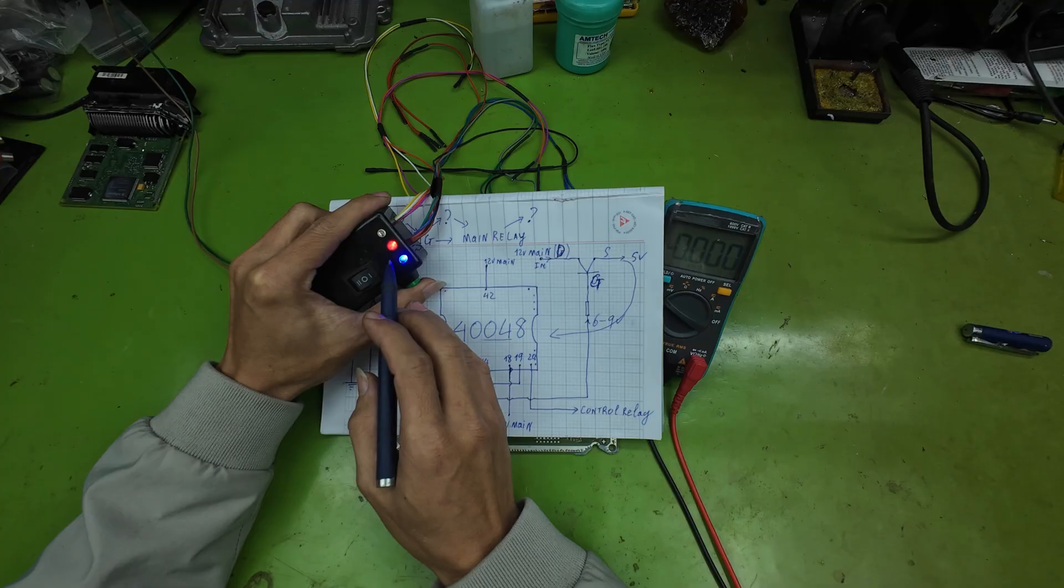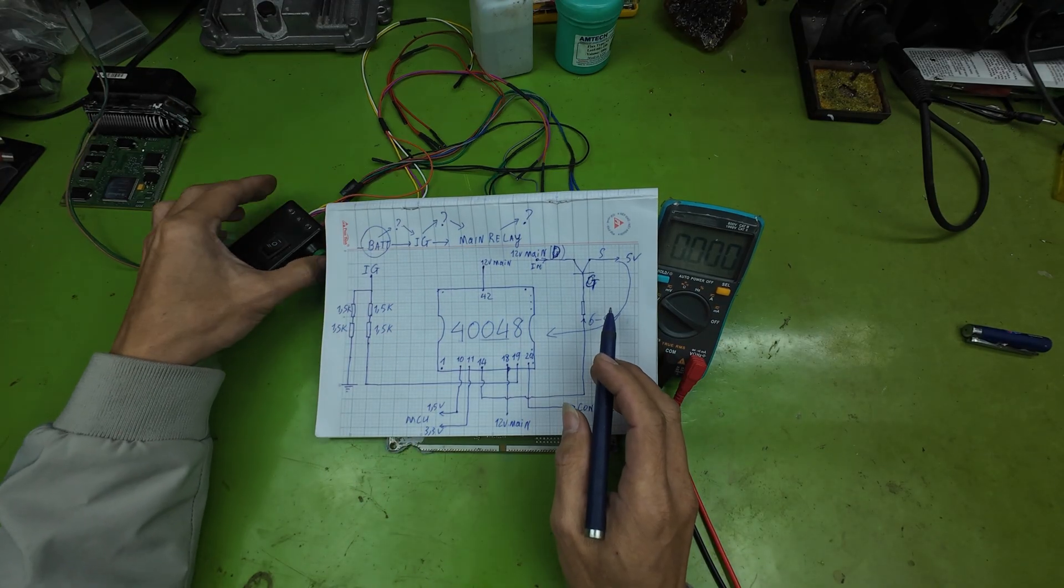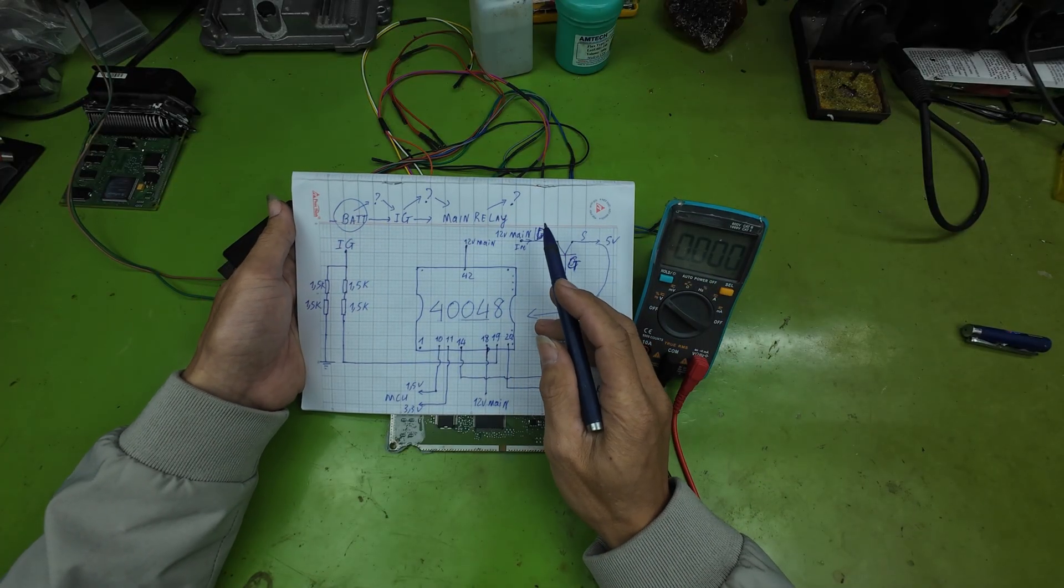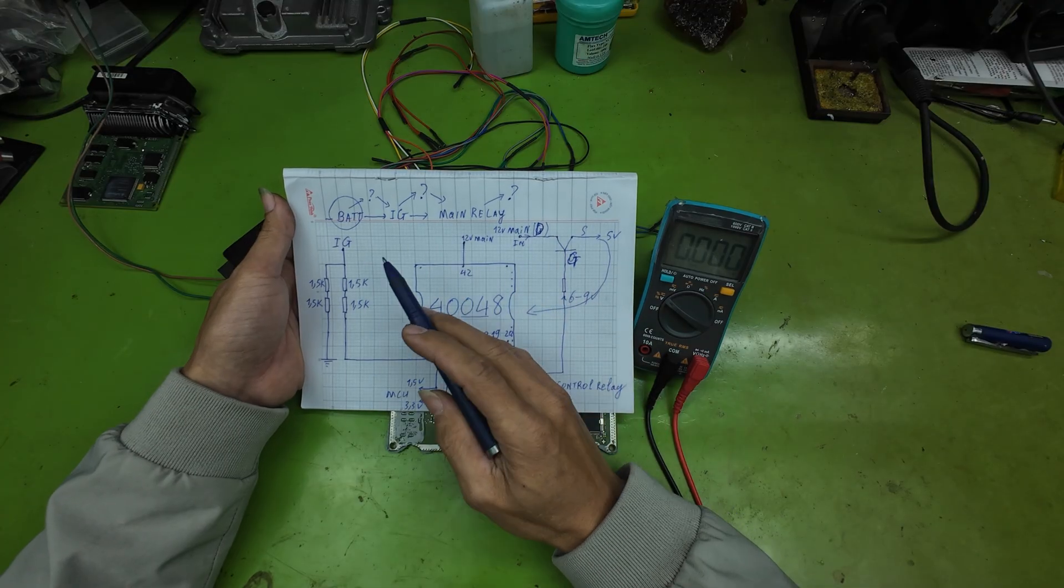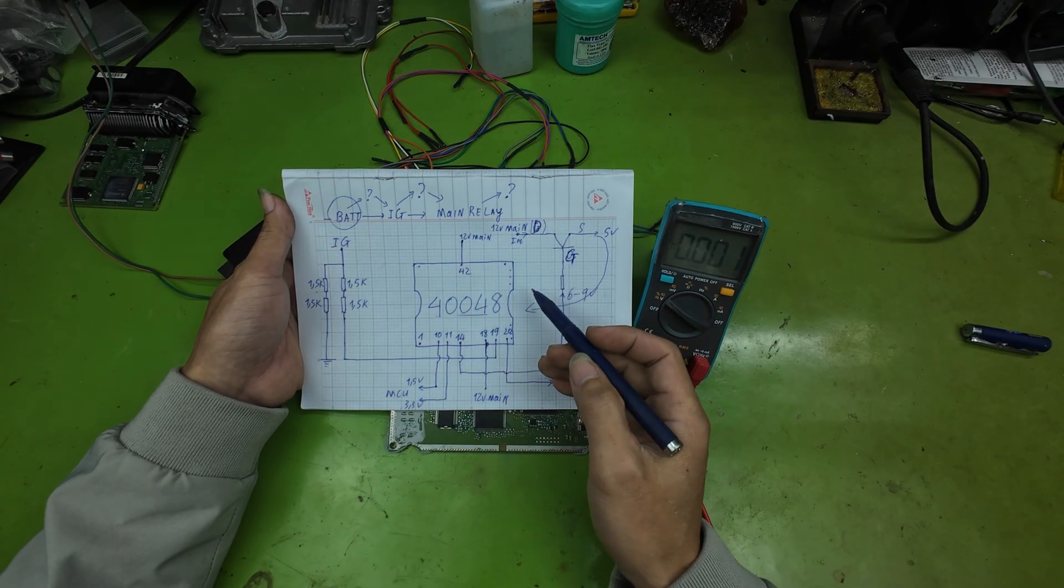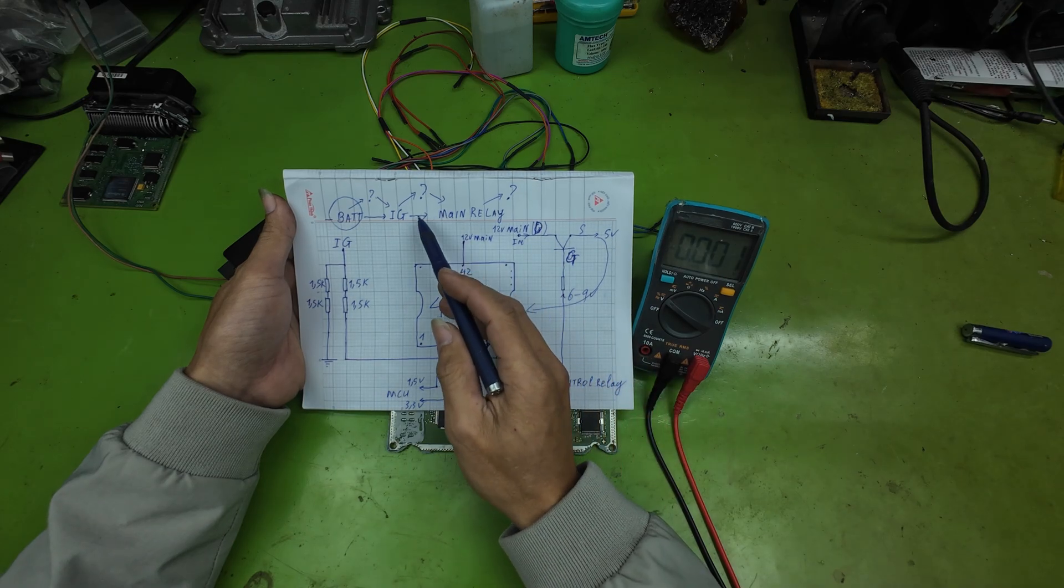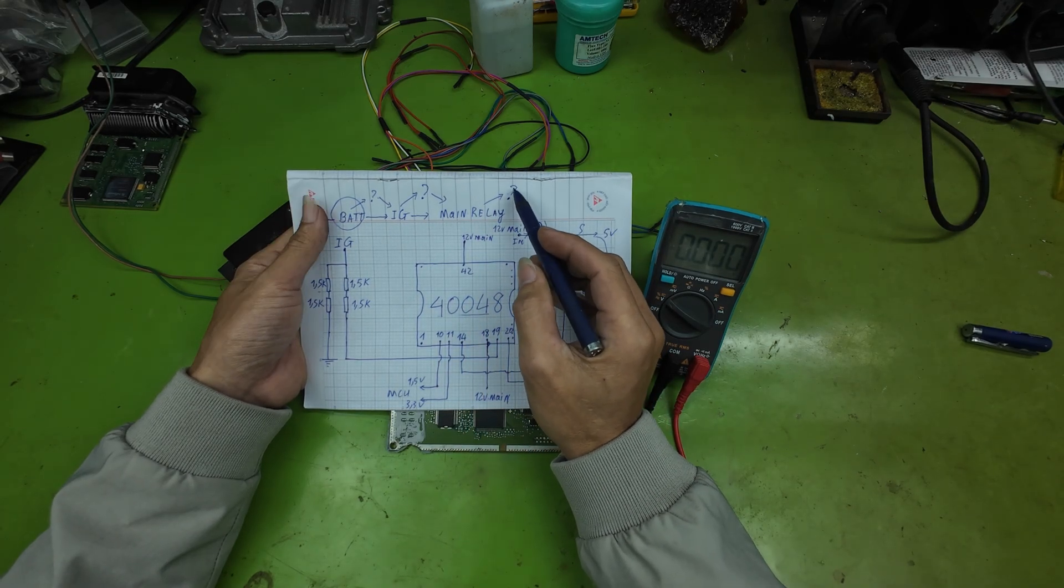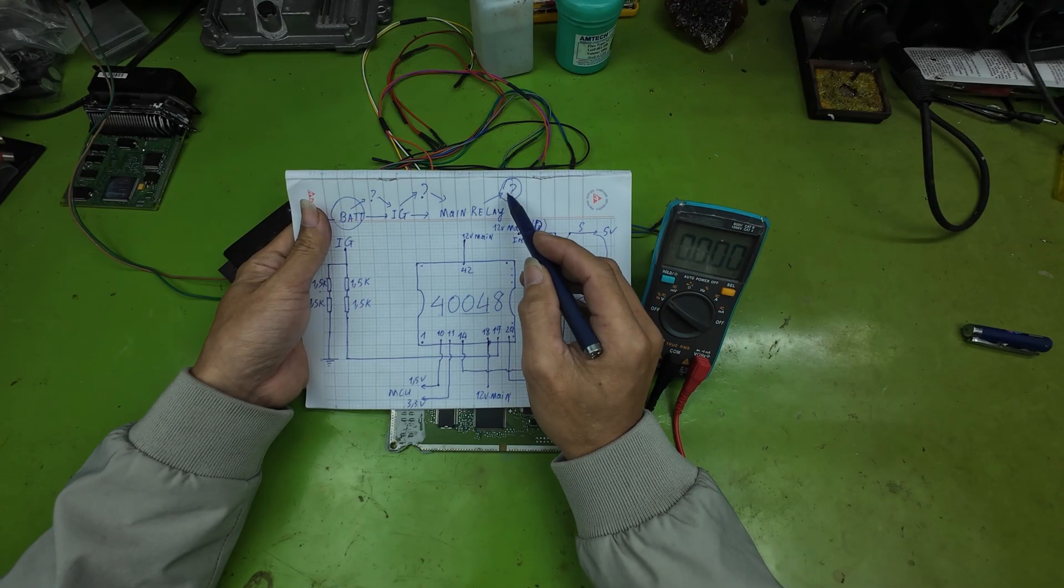So the question becomes, why is the ECU still not running even though the main relay is closed? We must think logically about what follows relay activation. Specifically, check the following conditions.